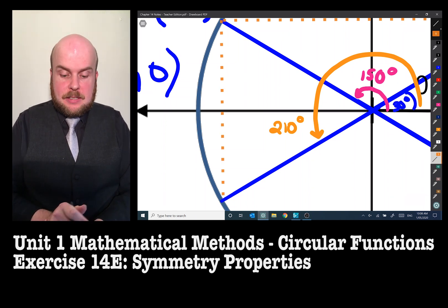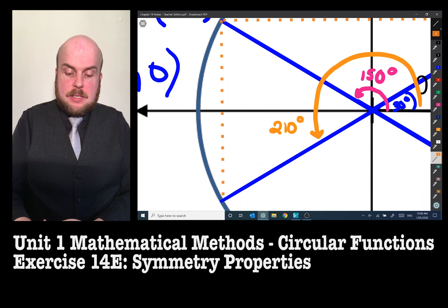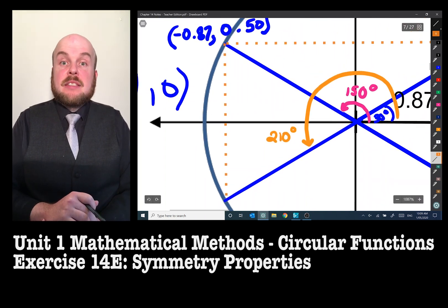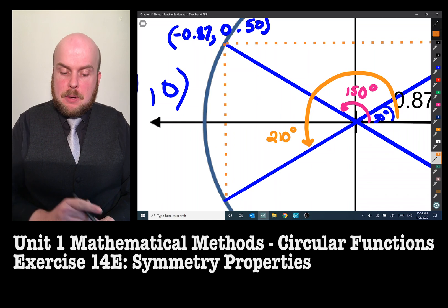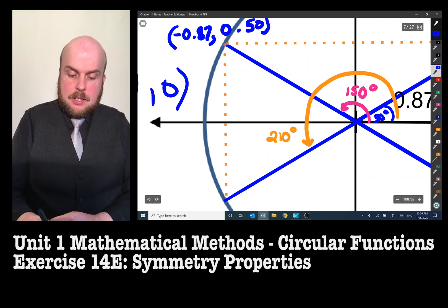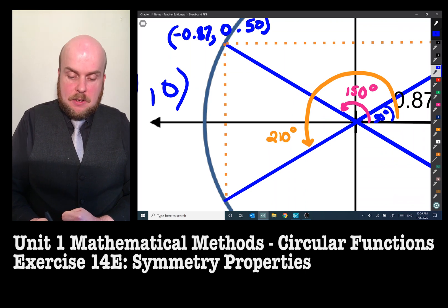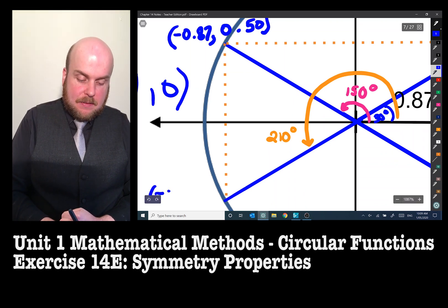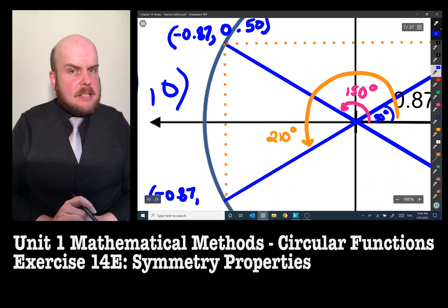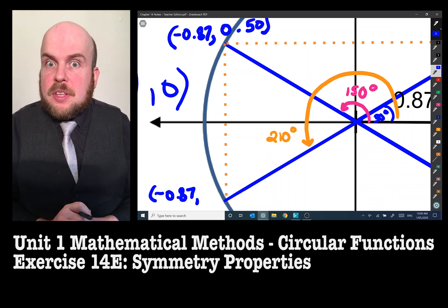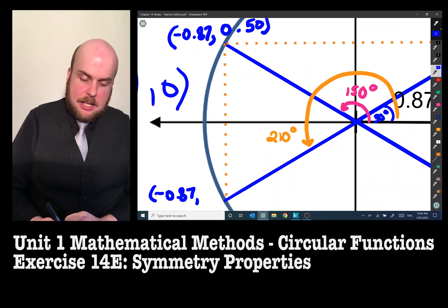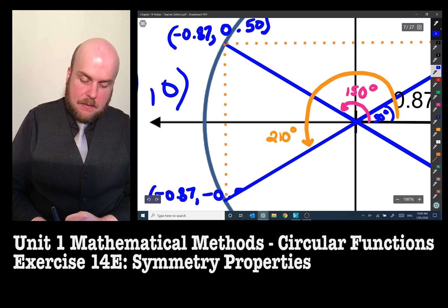And as we can see, the coordinates at the top here are symmetrical to the coordinates at the bottom. So here the x value is still going to be at -0.87, but this time the y value or the sine of the angle is equal to -0.50.